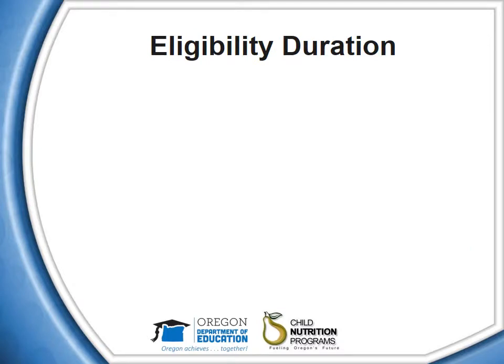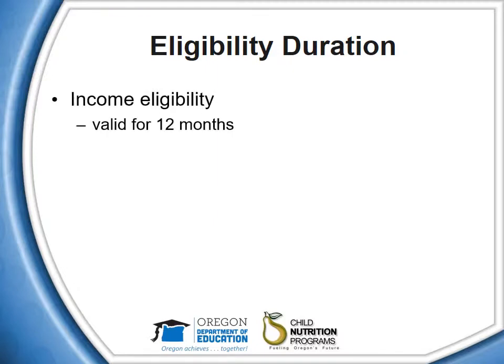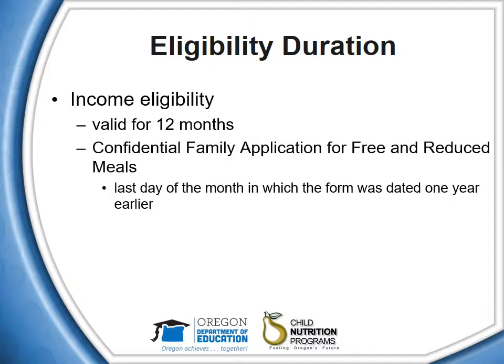SFSP sponsors of campsites must collect and report to ODE CNP income eligibility information in order to determine the eligibility of individual participants for free meals under the SFSP. The number of free and reduced price participants is reported in CMP Web. Income information must be updated annually and may not be more than 12 months old. Confidential family applications for free and reduced price meals are valid until the last day of the month in which the form was dated one year earlier.